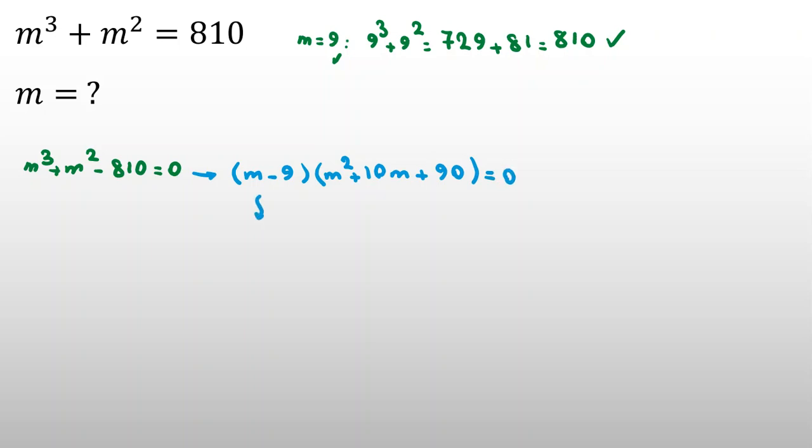So, first term is 0 or second term. Now, first term m equal to 9, and we checked this in the beginning of the video, and the other roots. Here,